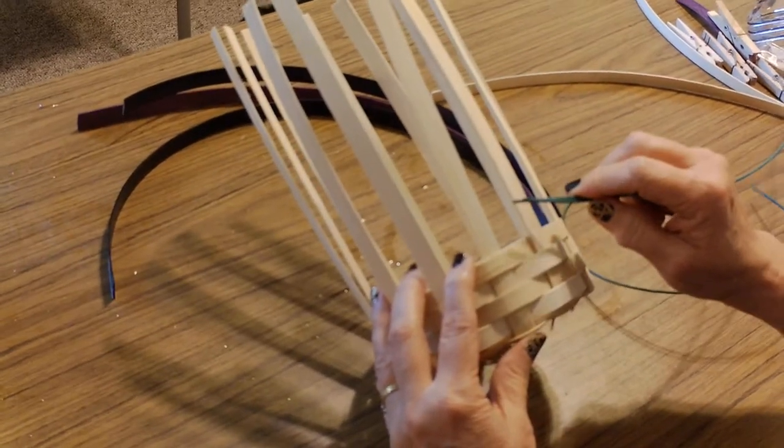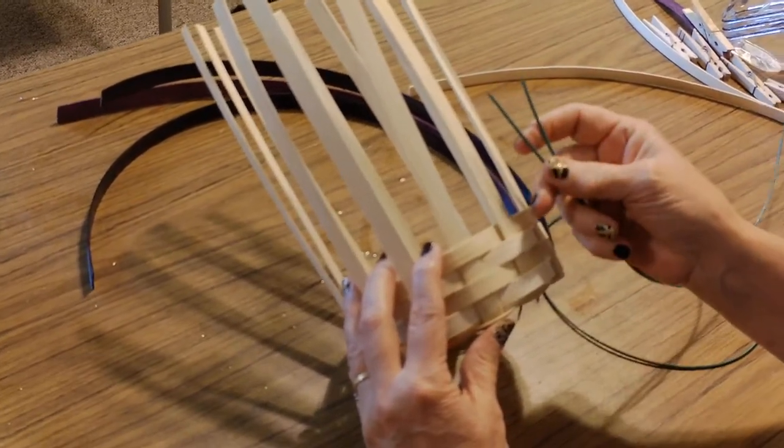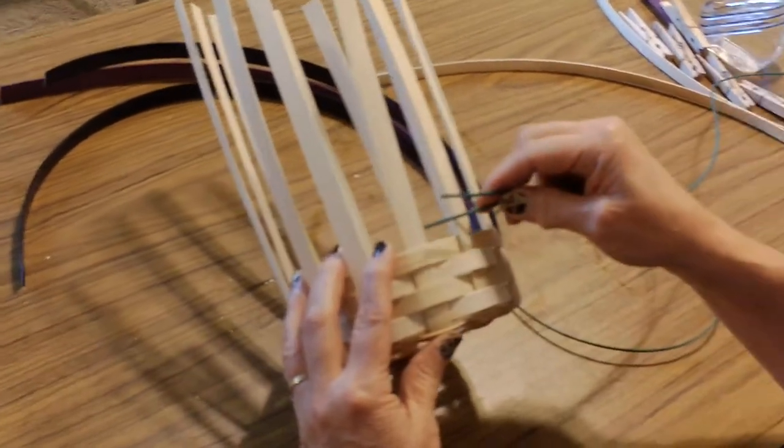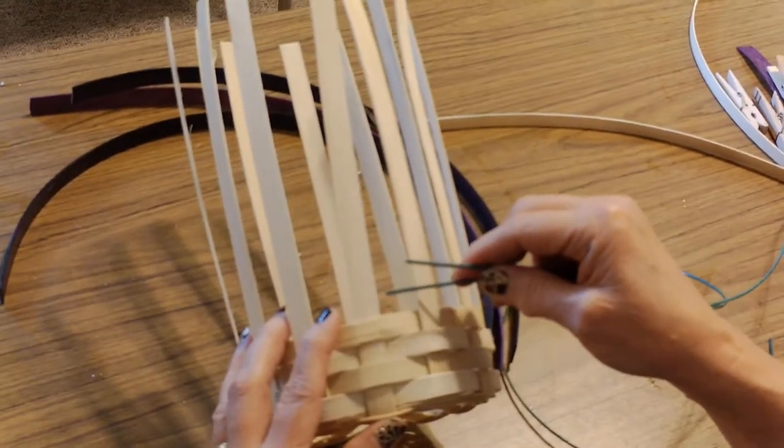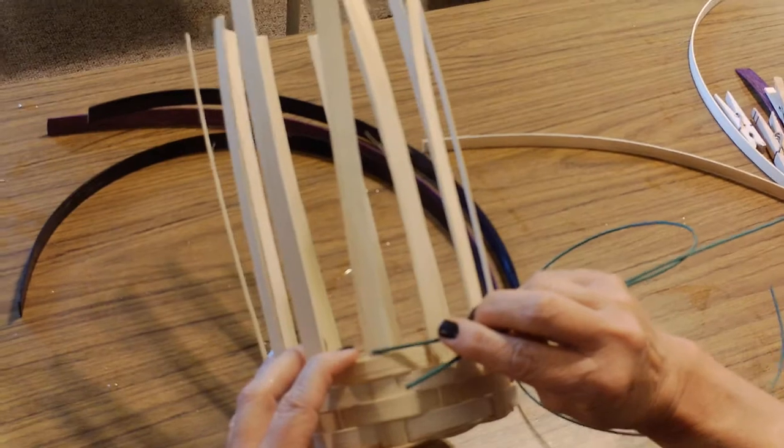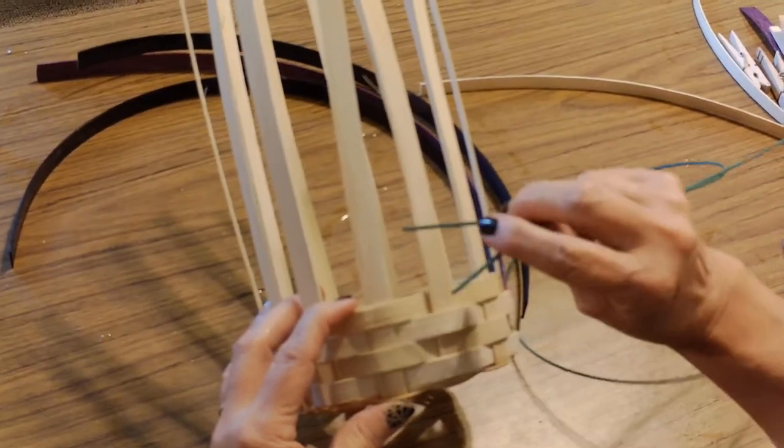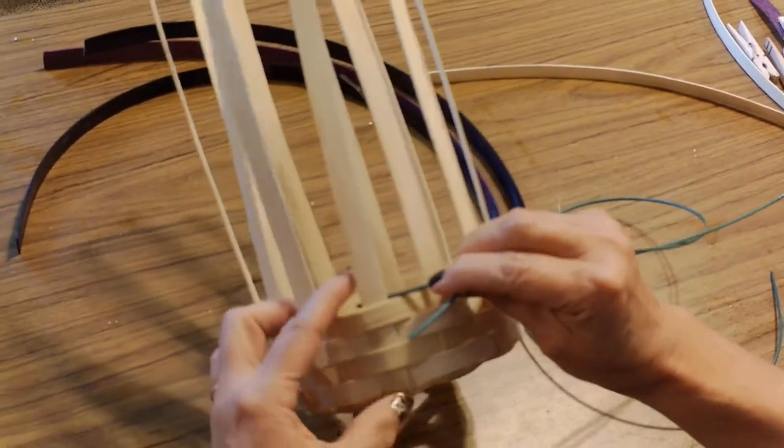With the color patterns on this basket, I'm going to do twining. I've shown you how to do twining on the bottom of a basket, so now we're going to do it on the side. Going to start one piece behind and one piece behind the next one.